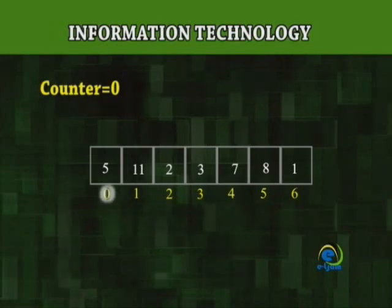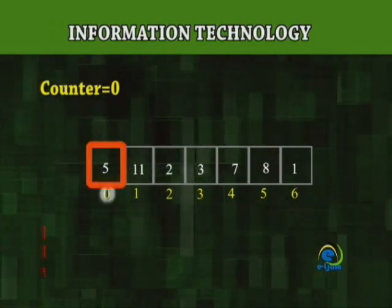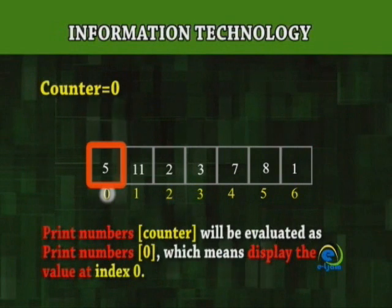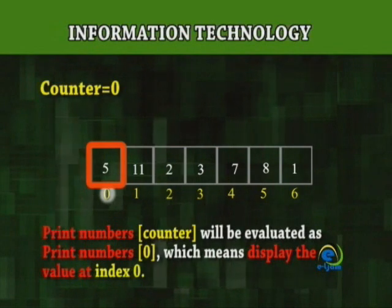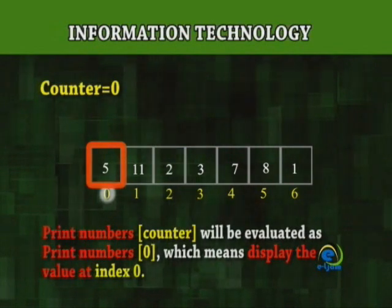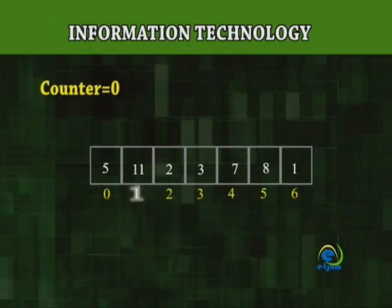This means that at the first iteration of the loop, the statement print numbers counter will be evaluated as print numbers at index 0, which means display the value at index 0.